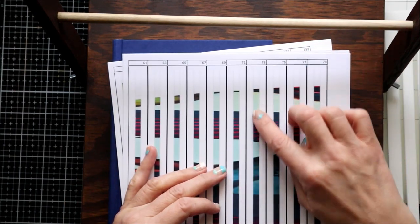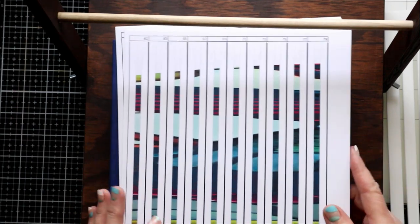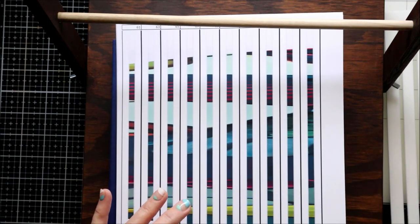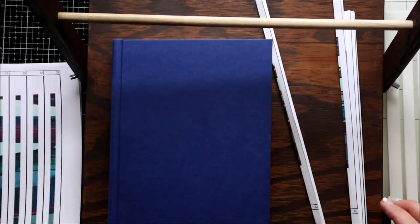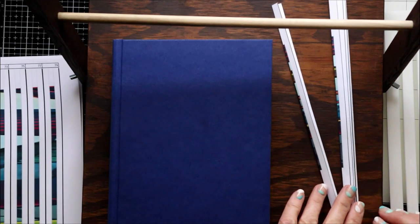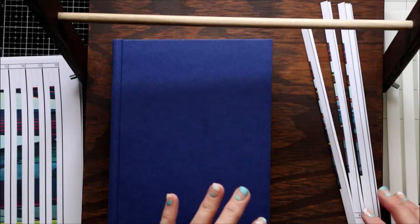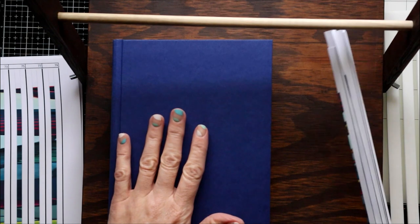You do have to fold right down the middle, which sometimes people have a hard time folding in half, but it really is not that difficult. I have folded some here already because I didn't want to spend the time folding the strips. I wanted to show you more the process of applying it to the book.